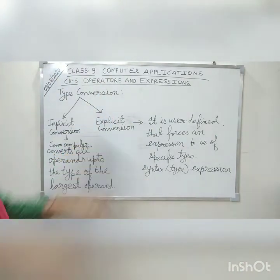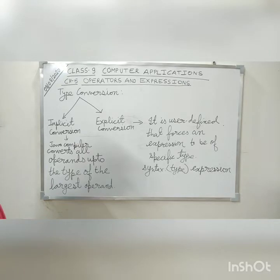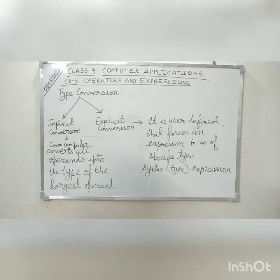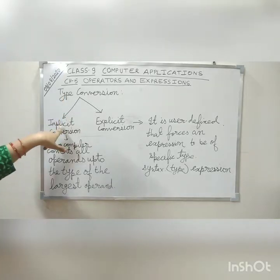What I explained about type conversion — type conversion means the conversion of one data type to another data type. You all know that there are eight types of primitive data types in Java: short, int, float, double, and so on. When we convert from one data type to another data type, this process is known as type conversion. There are two types of type conversion in Java: the first is implicit conversion and the second is explicit type conversion.